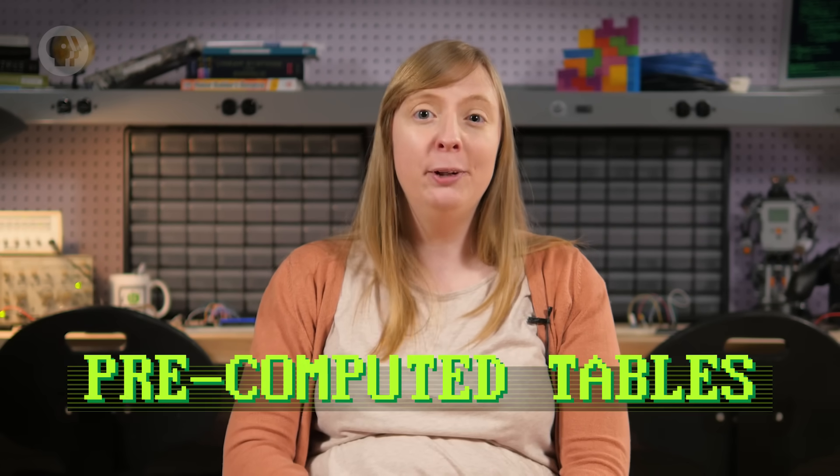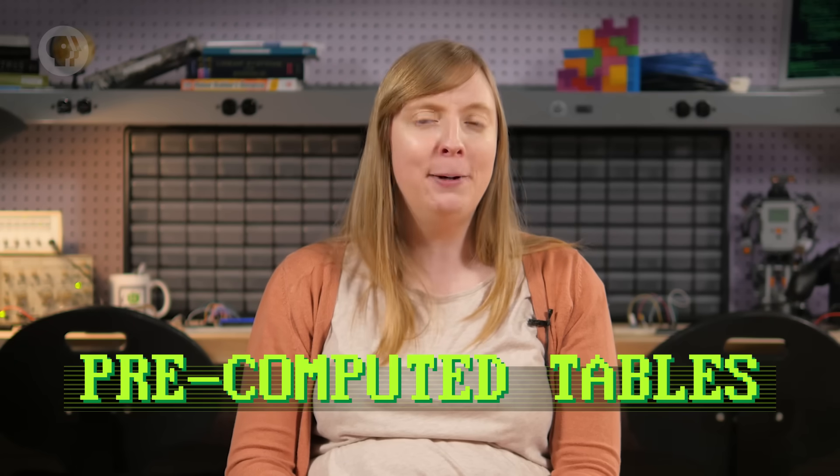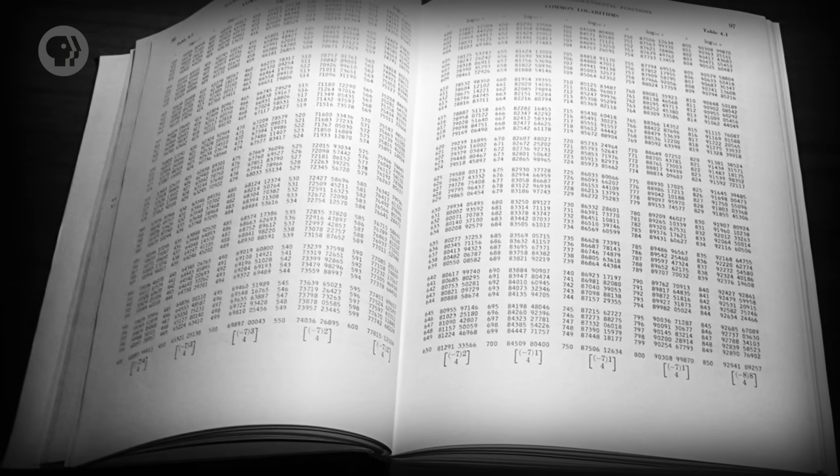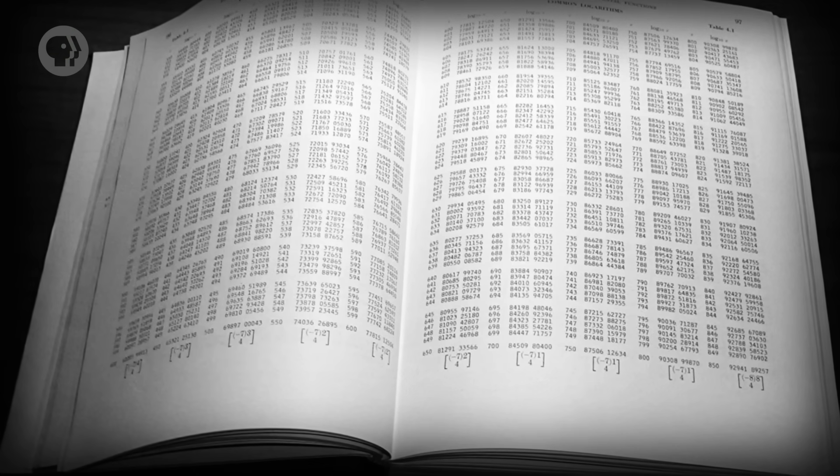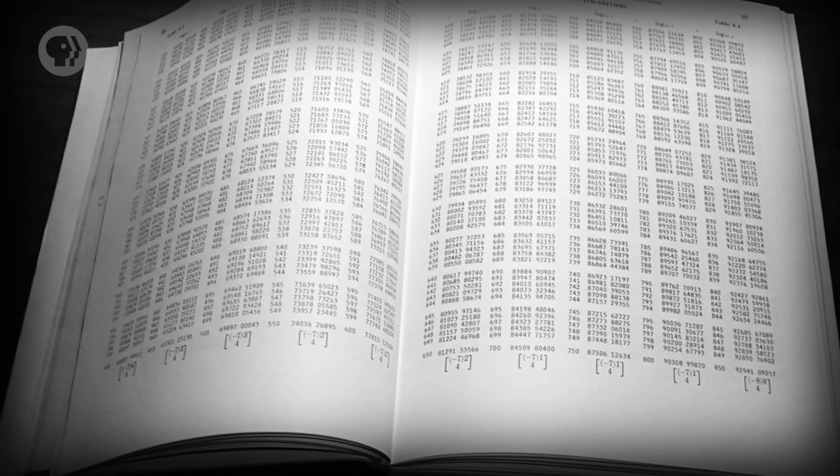Before the 20th century, most people experienced computing through pre-computed tables assembled by those amazing human computers we talked about. So if you needed to know the square root of 8,675,309, instead of spending all day hand-cranking your step reckoner, you could look it up in a huge book full of square root tables in a minute or so.